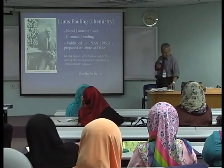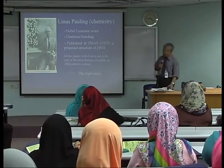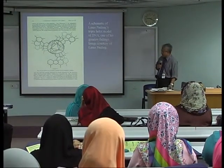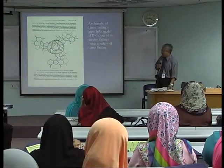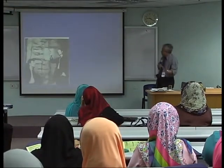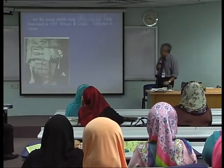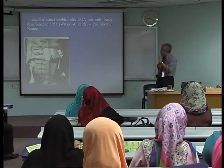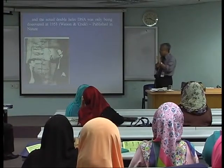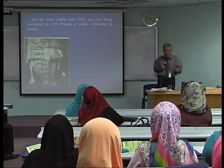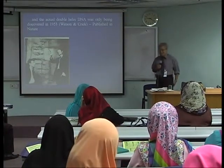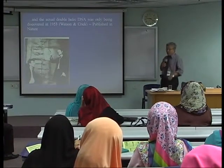The triple helix was the model Pauling proposed; the actual model is the double helix. In his triple helix, all the bases are outside and the phosphate — which is negatively charged — is inside, making it unstable. The actual double helix DNA was discovered in the same year by James Watson, an American biochemist, and Francis Crick, a British physicist, who published in Nature.